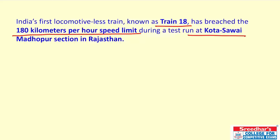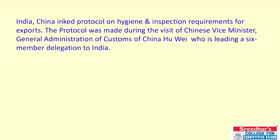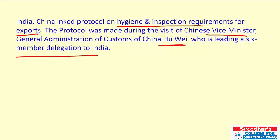Train 18, India's first locomotive-less train, breached the 180 km/h speed limit during a test run at the Kota–Sawai Madhopur section in Rajasthan. India and China inked a protocol on hygiene and inspection requirements for exports during the visit of Chinese Vice Minister of General Administration of Customs, Huang, who led a six-member delegation to India.